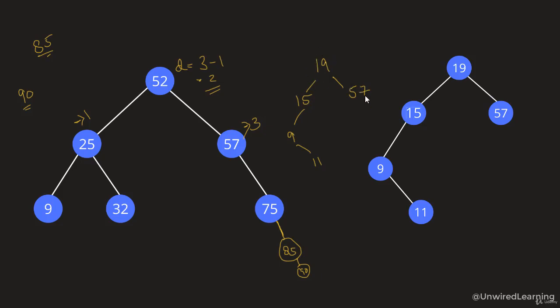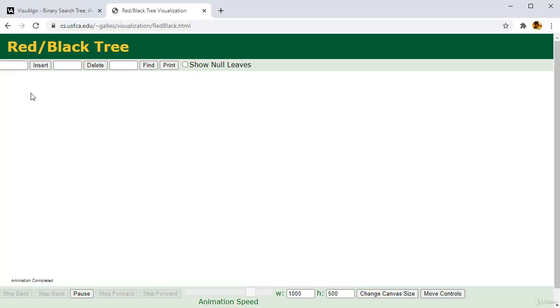First we have 19, we created it as a root node. Then 57 we added at its right. Then 15 which was left. Then 9 which was left because 9 is less than 15, then 11. So 11 is greater than 9, we added it here. Now if I follow the same structure, what I am going to do is first I am going to add my root node which is 9.